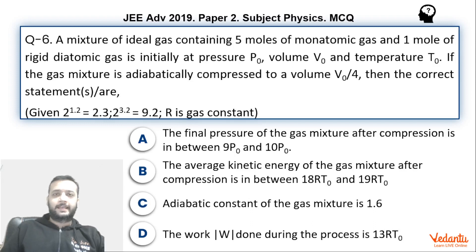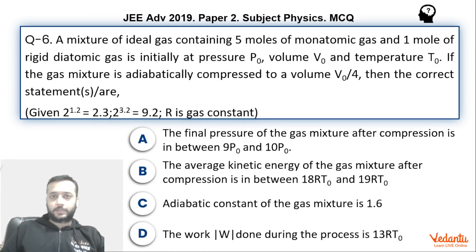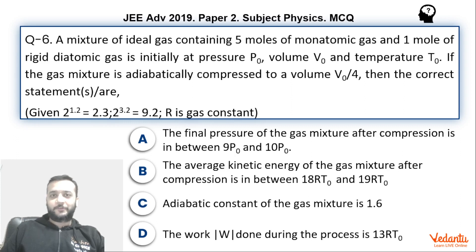Hi dear students, let's see this question that came in JEE Advanced Paper 2 Physics in the year 2019. The question is from thermodynamics, based on a multiple choice correct marking scheme — again one of the very easy questions in this paper.